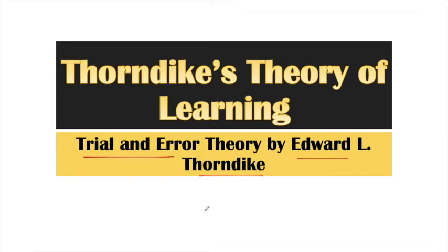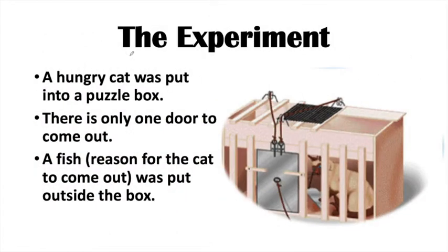Let's start with the theory. First of all, let's see what Thorndike did. He performed an experiment on a hungry cat. He placed a hungry cat inside a puzzle box. The only way to come out was through a door, and outside the door he placed a fish — that was the reason for the cat to want to come out.